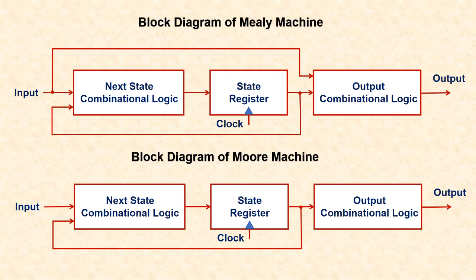Now we will see the block diagrams of the Mealy machine and Moore machine. Both block diagrams consist of input, next state combinational logic, state register, output logic, and output. The only difference is that in a Mealy machine the output also depends on the input in addition to the present state. The next state and output combinational logic circuits consist of logic gates whose outputs depend only on the current state of their inputs. The state register is the memory element that stores the state of the finite state machine, synchronized by a global clock — here we use flip-flops.